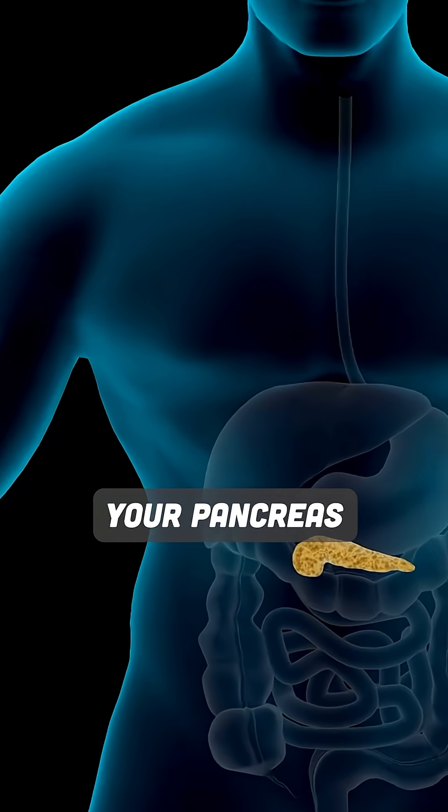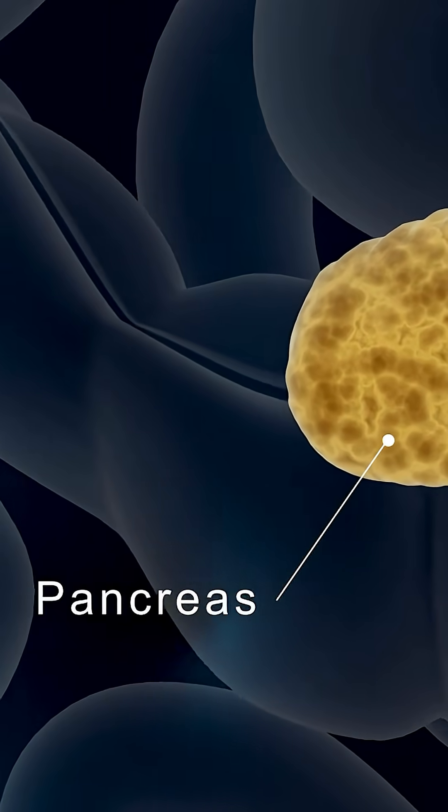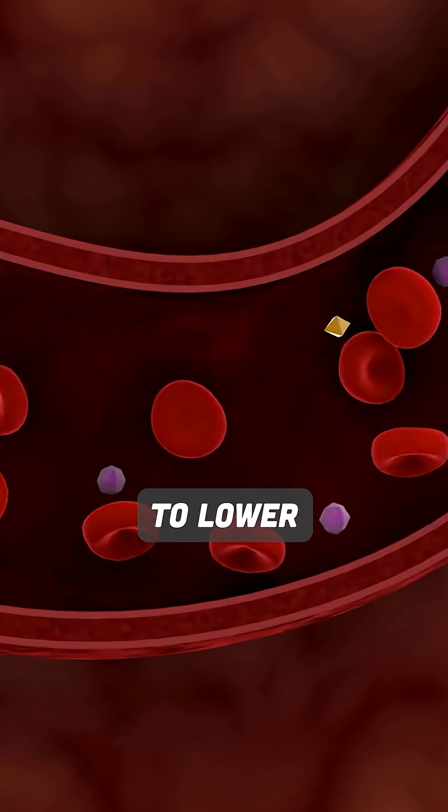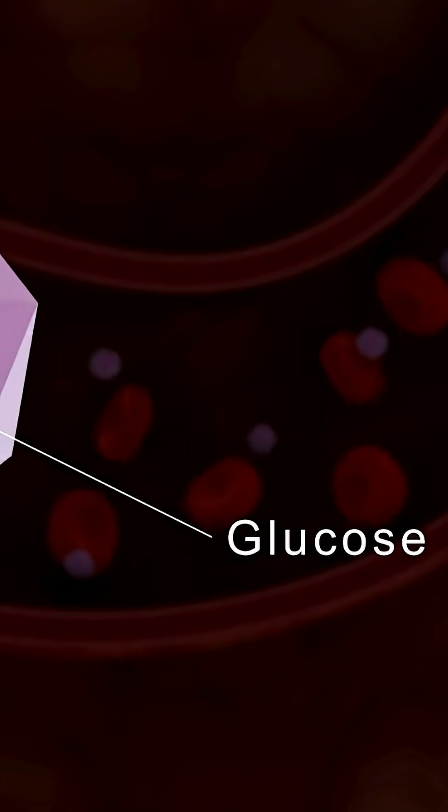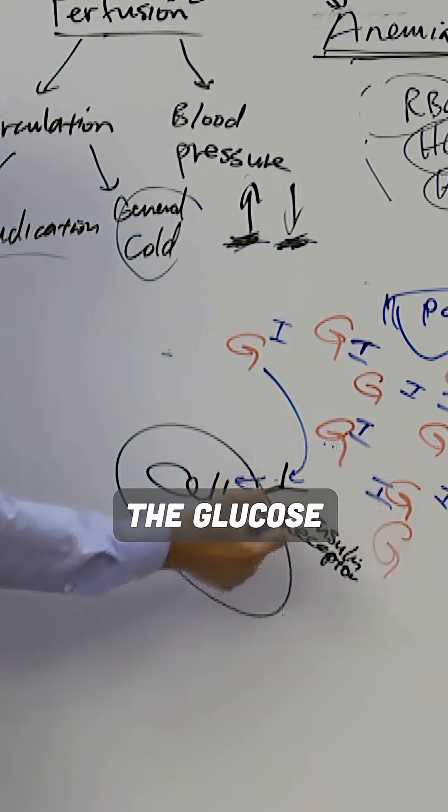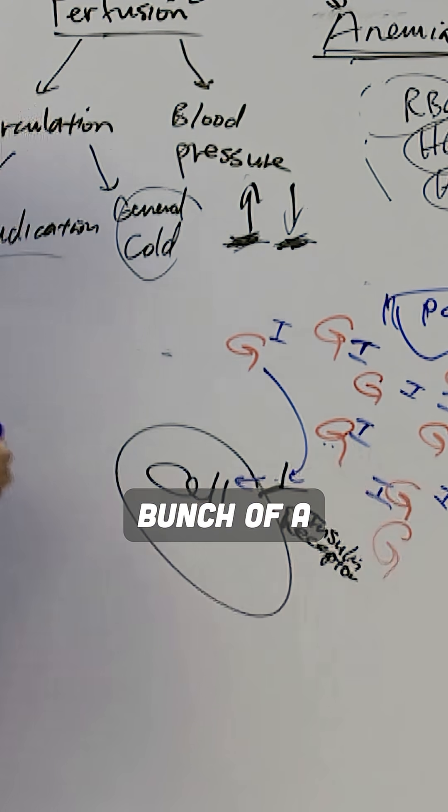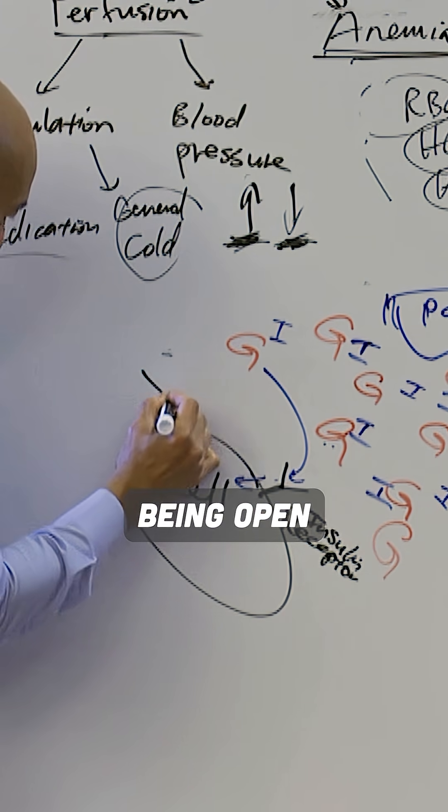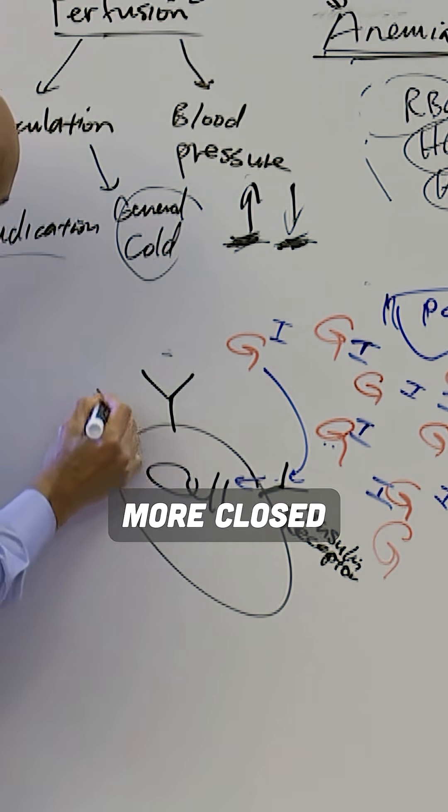So when that happens, your pancreas freaks out, makes a bunch of insulin because the job of insulin is to lower the glucose in your blood by transporting the glucose into the cell. But when you have a bunch of insulin, this receptor, instead of being open, becomes more closed.